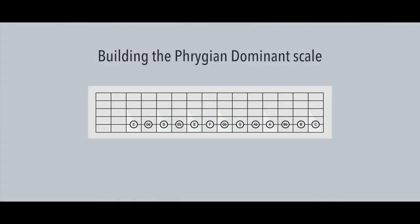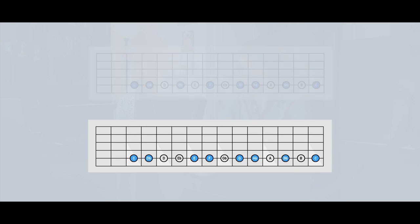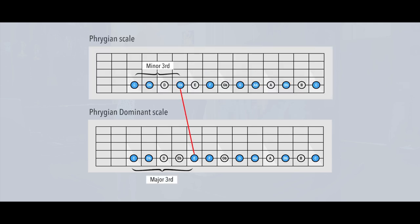Let's build the Phrygian dominant scale on the 12-note chromatic scale starting on the root note C. We'll start with the root C, then a semitone higher the second degree, and an augmented second higher the third degree. Then again a semitone higher the fourth degree, and a whole tone higher the perfect fifth degree. A semitone higher the minor sixth degree, and a whole tone higher the minor seventh degree, ending with a whole tone higher on the root. This scale is exactly the same as the Phrygian scale, only the Phrygian dominant scale is a major scale — it has a major third.